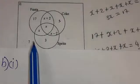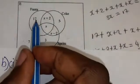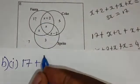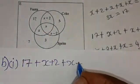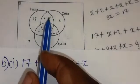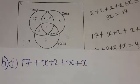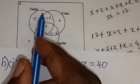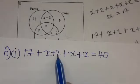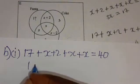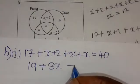So we are going to have 17 plus X plus 2, plus X, plus another X — making sure all elements in set Fanta are added — equal to 40, because we are told there are 40 learners in set Fanta. Collecting like terms: 17 plus 2 is 19, and X plus X plus X gives 3X, so 19 plus 3X equals 40.